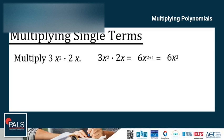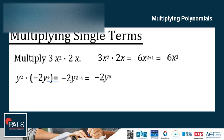Let's see another example: y squared times negative 2y to the 4th power. Adding the exponents of y squared and y to the 4th power, the final answer is negative 2y to the 6th power.